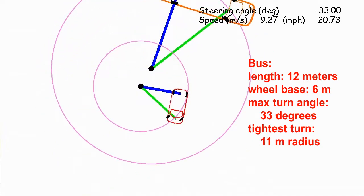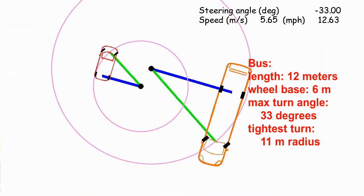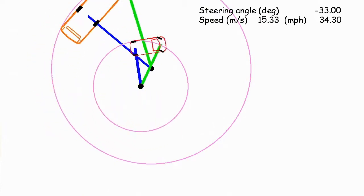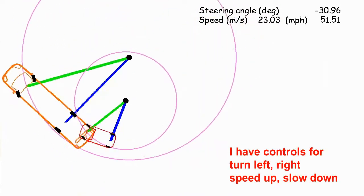If I change their turn radiuses at all, then they'll turn in different circles. Here, they're turning in different circles, and I'm not going to be able to get them back to go in the same circle.